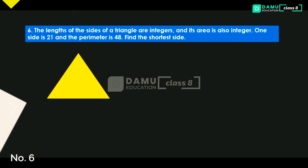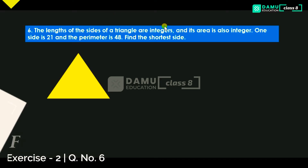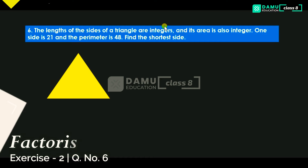Thanks for watching our videos. If you have not yet subscribed, please subscribe and hit the bell icon. In this module we are going to discuss: the lengths of sides of a triangle are integers and its area is also an integer. One side is 21 centimeters and the perimeter is 48. Find the shortest side.